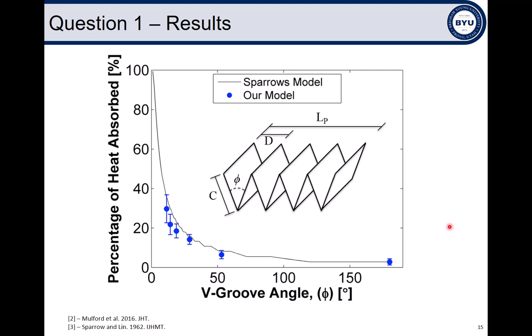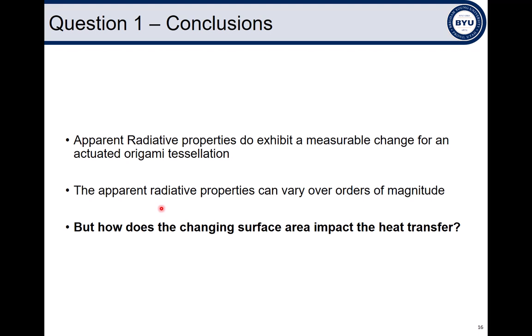The results of our inverse model experiment are plotted here and compared with Sparrow's model. That's an analytical model for an isothermal v-groove machined into an aluminum block. As you can see, not only do our results compare fairly well with Sparrow's model, but we also now have experimentally verified that a collapsing thin-walled v-groove does indeed experience an increase in apparent radiative properties. And even further, this change in apparent radiative properties is substantial, increasing by over an order of magnitude in this scenario. This work was published in the Journal of Heat Transfer in 2016. To summarize the findings from this work, apparent radiative properties do exhibit a measurable change for an actuated origami tessellation, and the apparent radiative properties can vary over orders of magnitude.